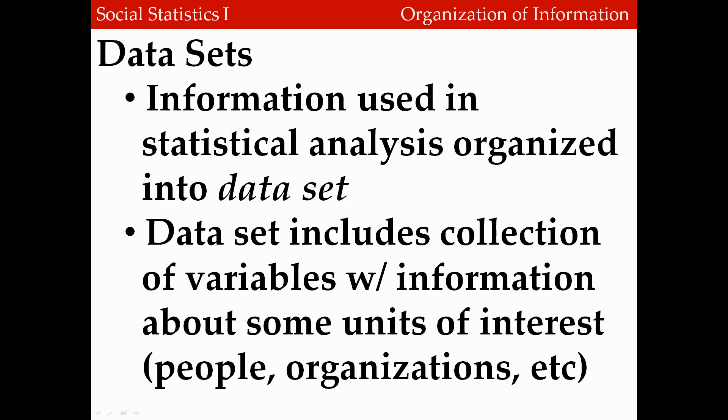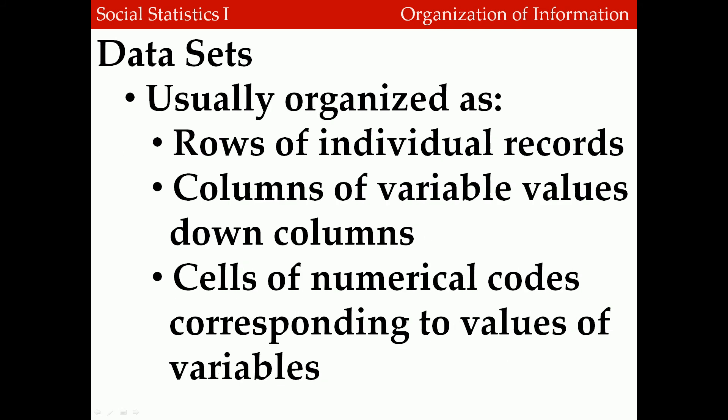Information used in statistical analysis begins as a data set. A data set is a collection of variables with information about some unit of interest — for example, people, organizations, or something else we're interested in studying. Data sets are usually organized into a series of rows and columns. Rows contain information on individual records, while columns contain the values of variables across individual records. The intersection of rows and columns is called a cell, and contains a numerical code corresponding to a value of a variable for a given individual.